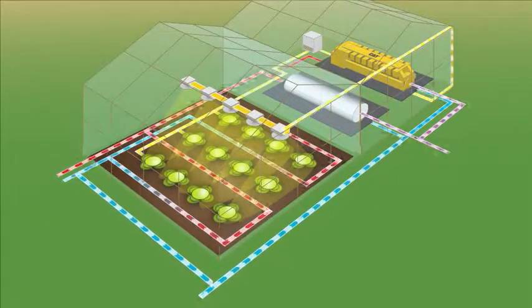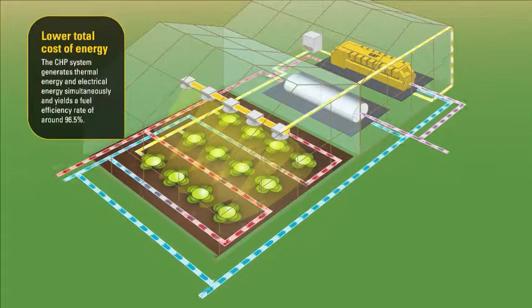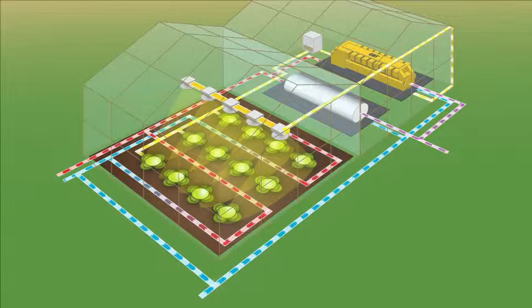By generating thermal energy and electrical energy simultaneously, the CHP system yields a fuel efficiency rate of around 96.5 percent, making the CHP system a much more cost-effective and sustainable solution for greenhouses.